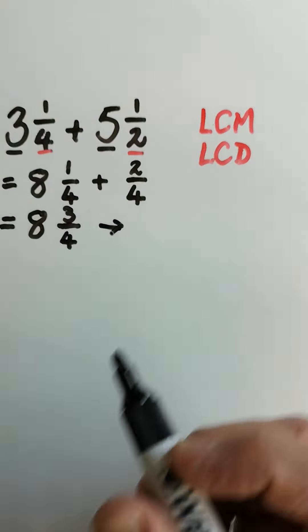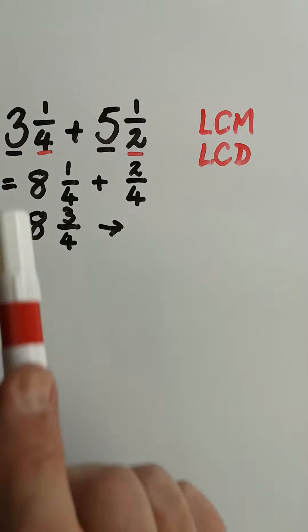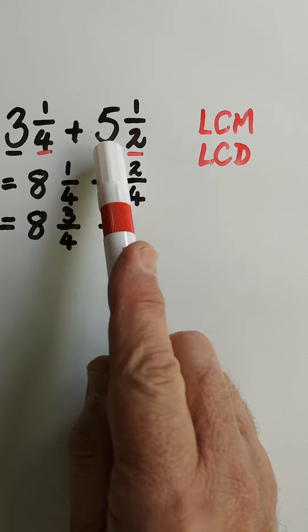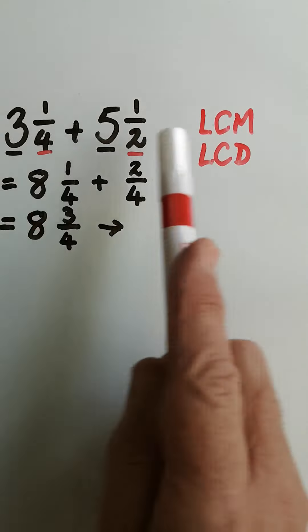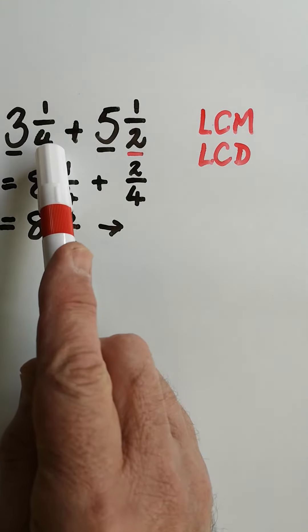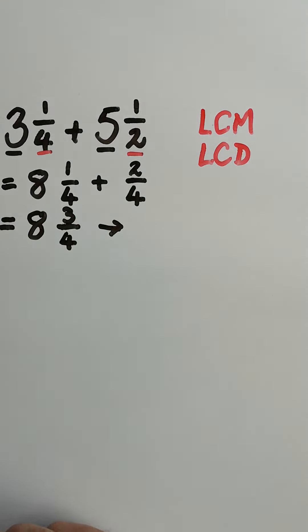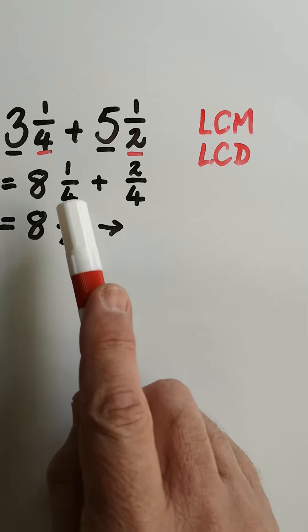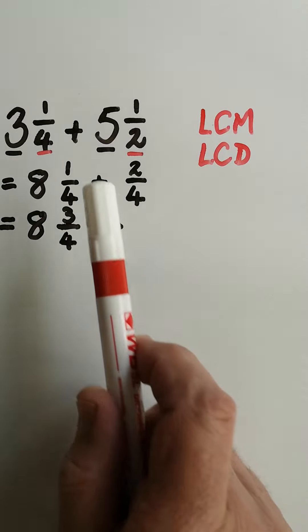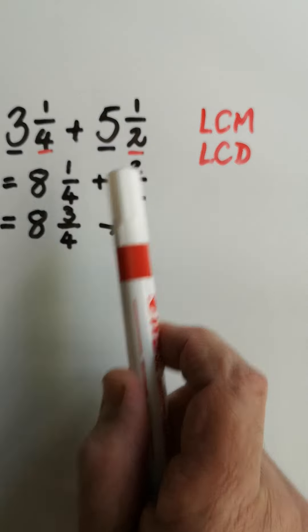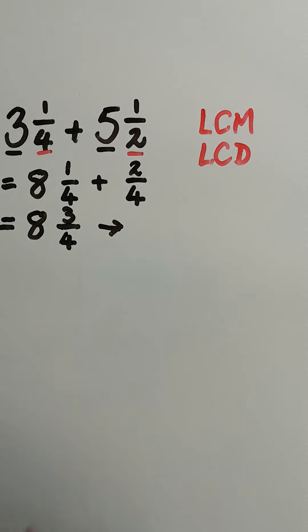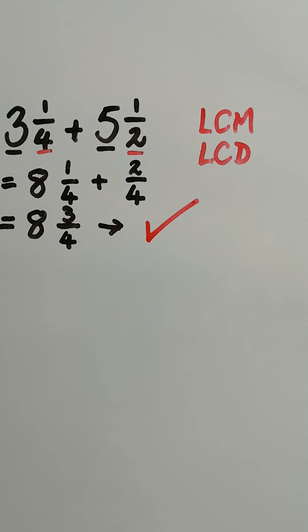So if we look at it again, what did we do? First we added the whole numbers, we got eight. Then we looked for the lowest common multiple or the lowest common denominator, in other words the number that both four and two could divide into. The lowest number, and in this case we found that the lowest number that both divided into was four. And then all we had to do was add the numerators. Don't add the denominator, the denominator stays the same, and eight and three quarters is the correct answer.